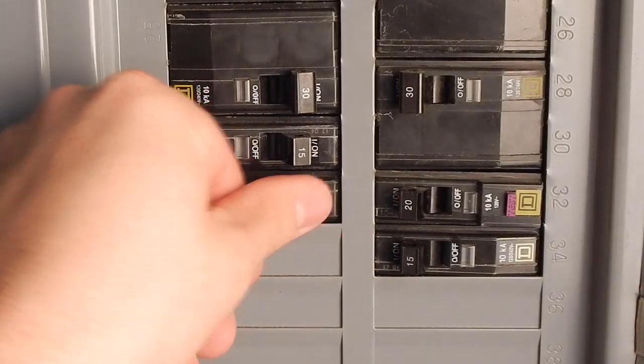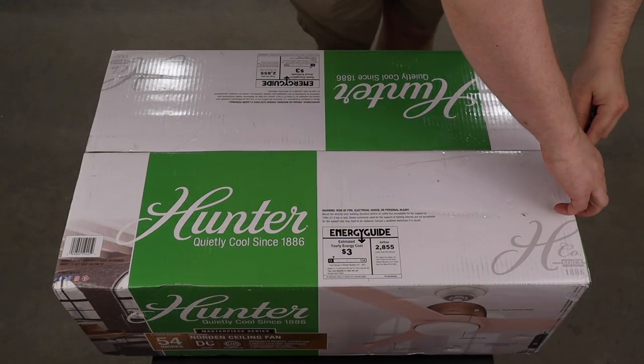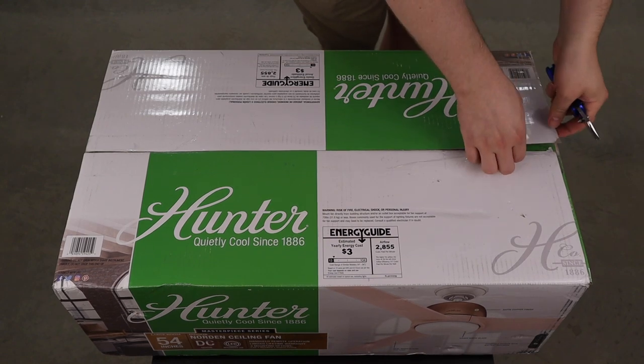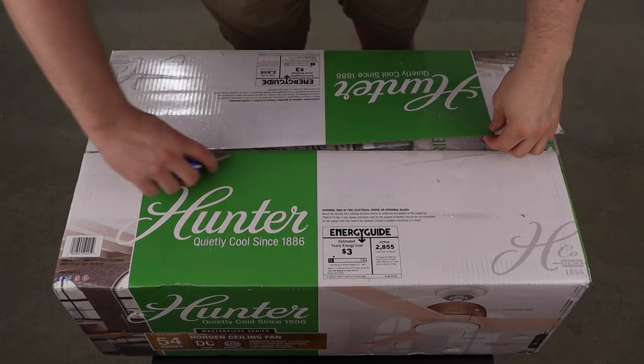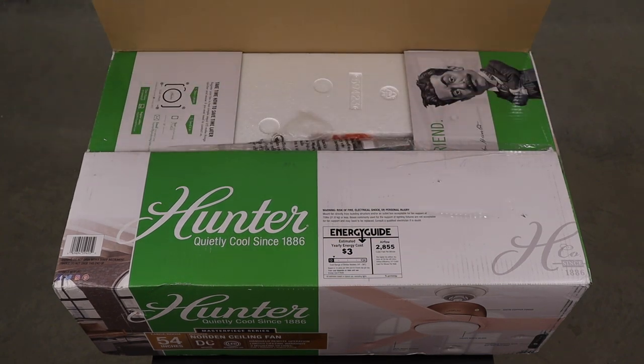Before you begin, turn off power at the breaker or fuse. Open the box carefully to not slice too deeply, as there are parts right below the flaps that could be damaged. As always, I like to remove all parts from the box so I can make sure everything is present and nothing is damaged.